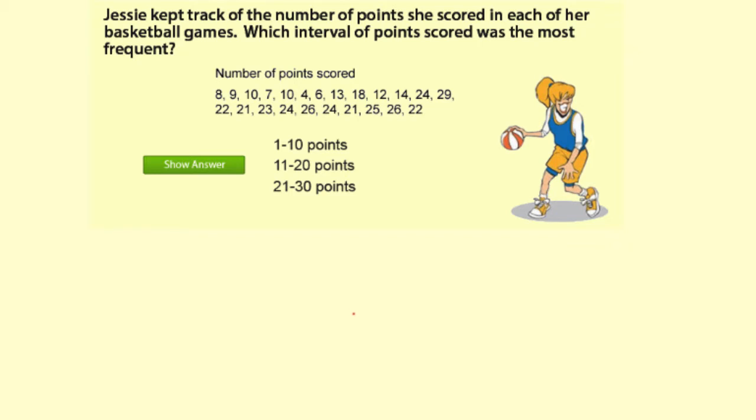It's about Jesse with points scored in the game, and the question is which interval of points scored was the most frequent? We're given the intervals already, so that makes setting up the table easy.